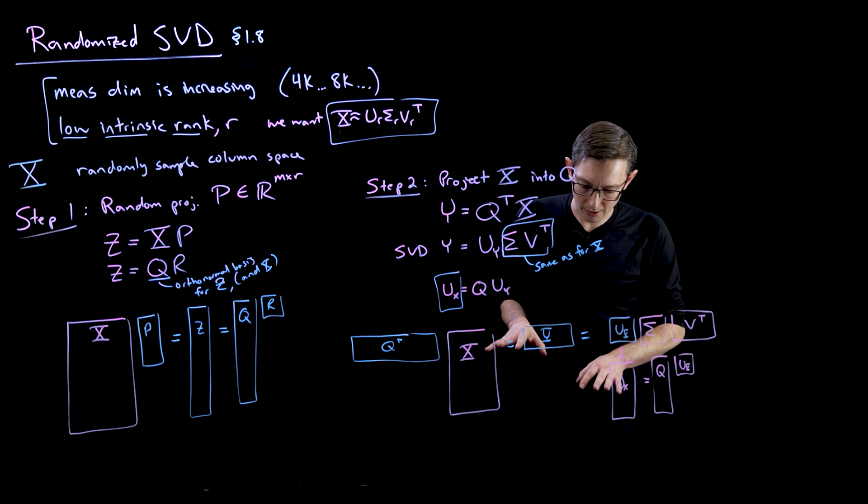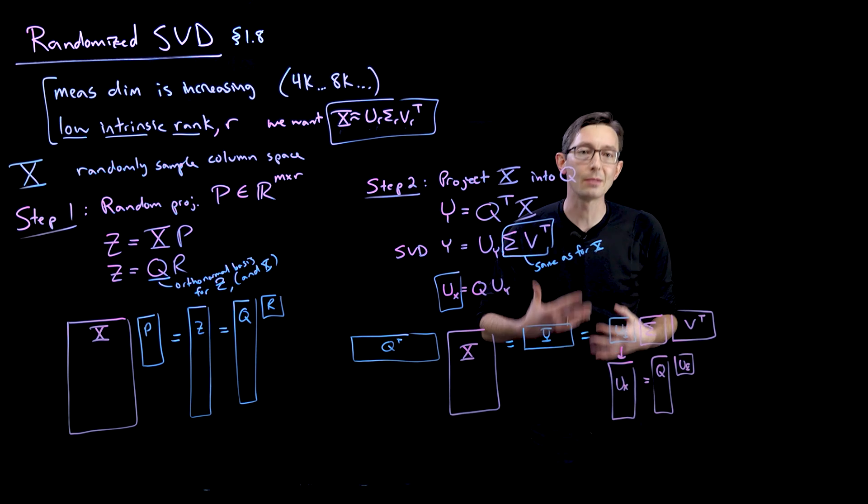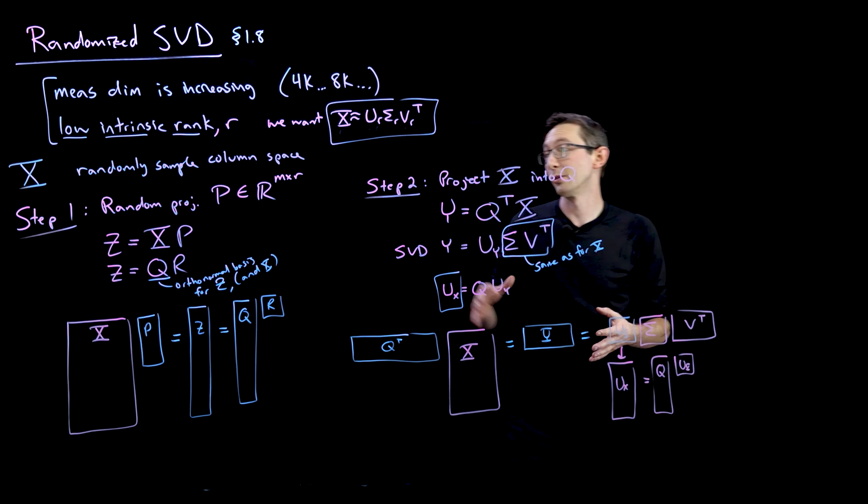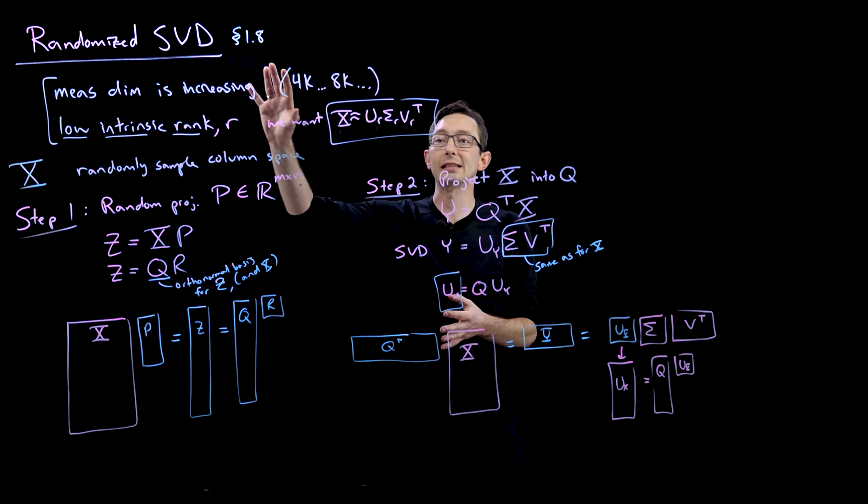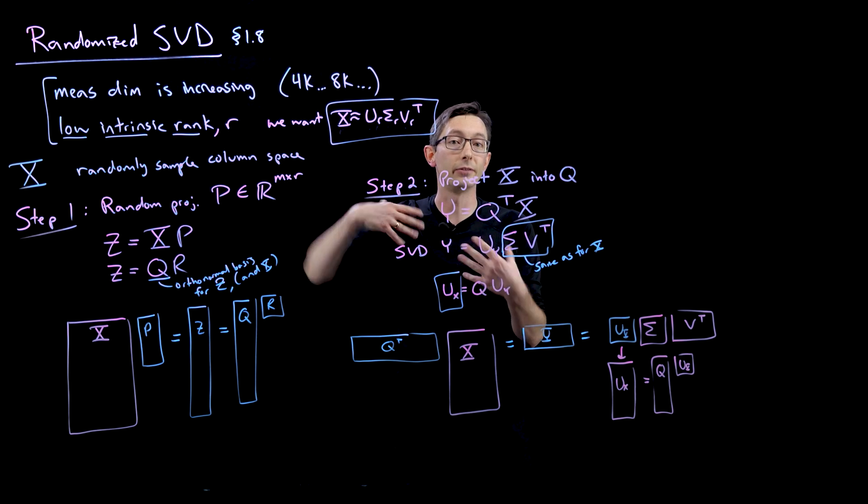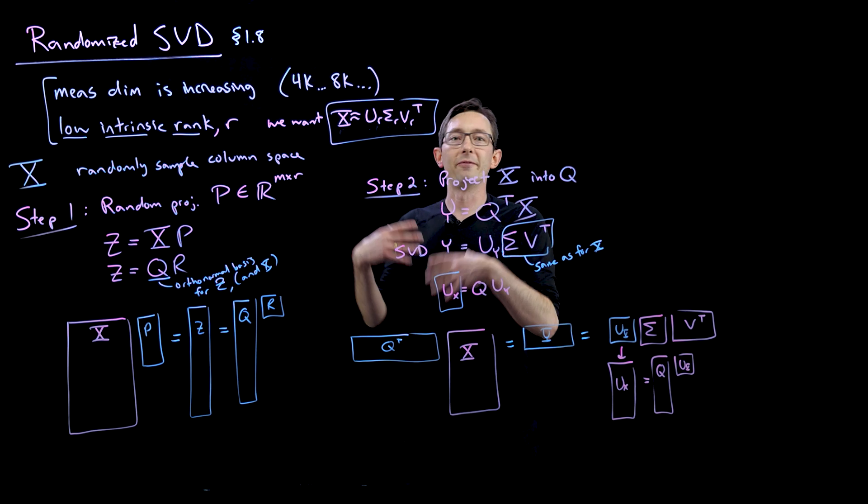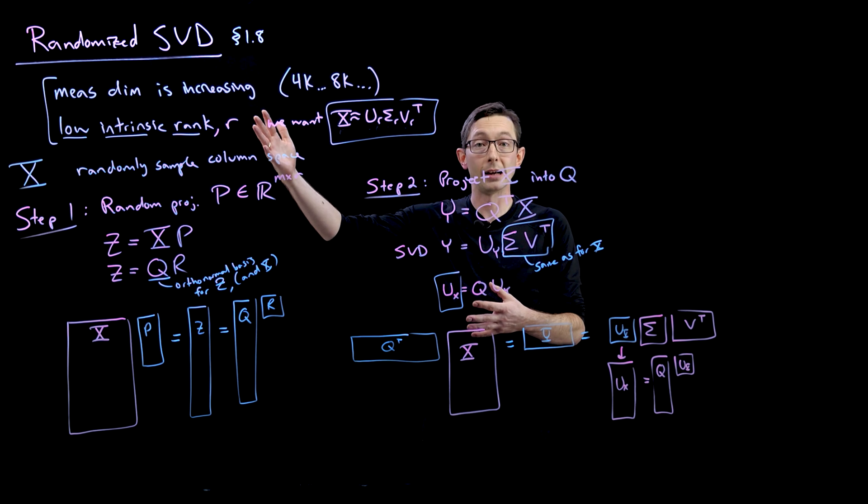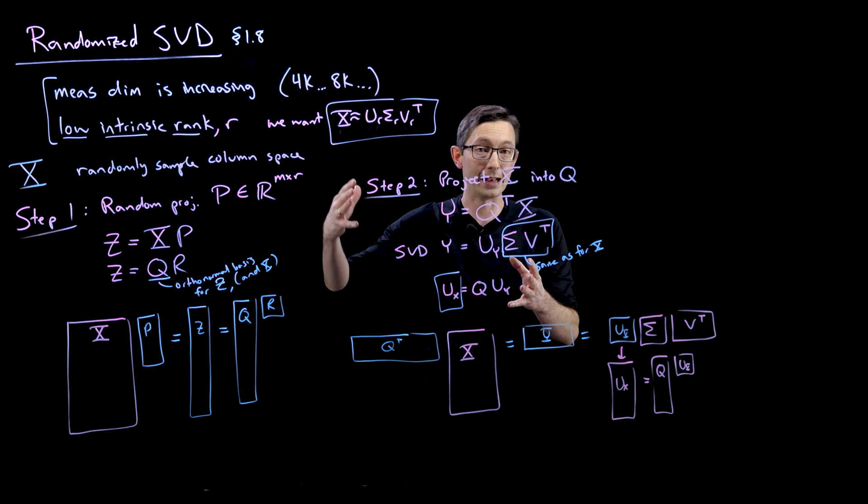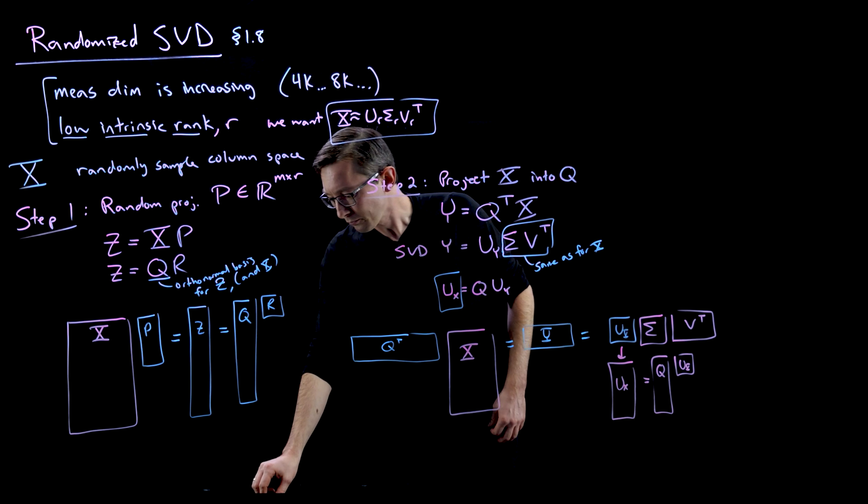So this is very, very useful technique in randomized numerical linear algebra. This is becoming pretty standard in a lot of fields with really big data like fluid dynamics. Facebook and Google are using randomized SVDs now because their data is so massive.